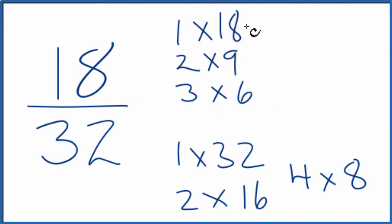We're looking for a common factor, the greatest common factor for 18 and 32. And the greatest factor is just 2.